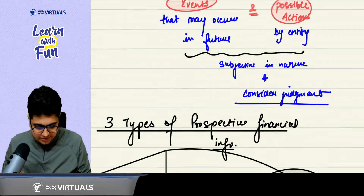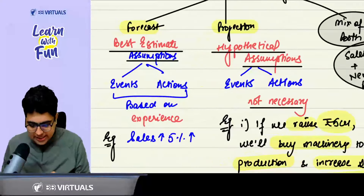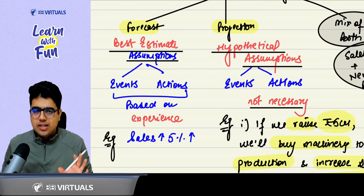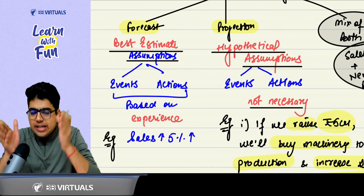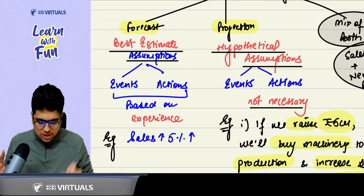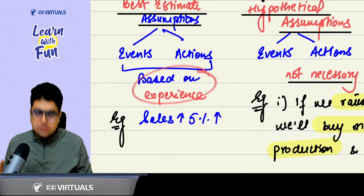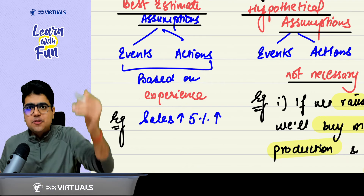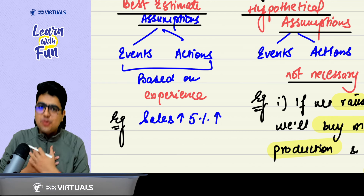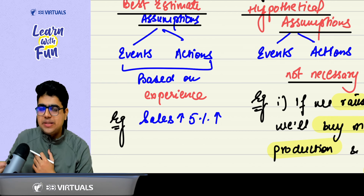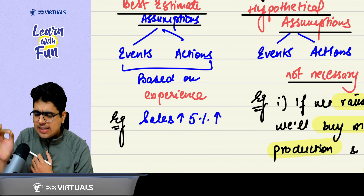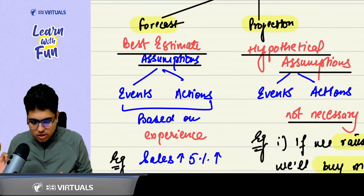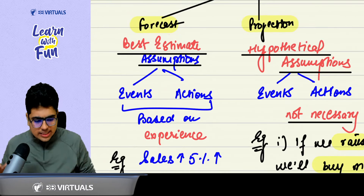There are three examples available. First of all, it is a forecast. A forecast is the best estimate assumption about the events which will occur and the entity's actions on them. This is based on experience. For example, in the past you have seen that sales have grown by 5%, so in the future you can make an assumption that sales will continue to grow at 5% — this is called a forecast.